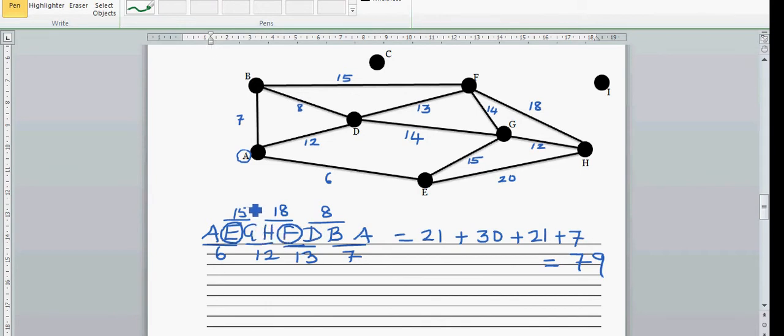Add the numbers. I've added 15 and 6 - that's 21. 18 plus 12 is 30. 13 plus 8 is 21, then 7. It is 79 minutes. There are other possible ways you can find, but the lowest would be 79 minutes - the shortest time to start at A and come back to A.